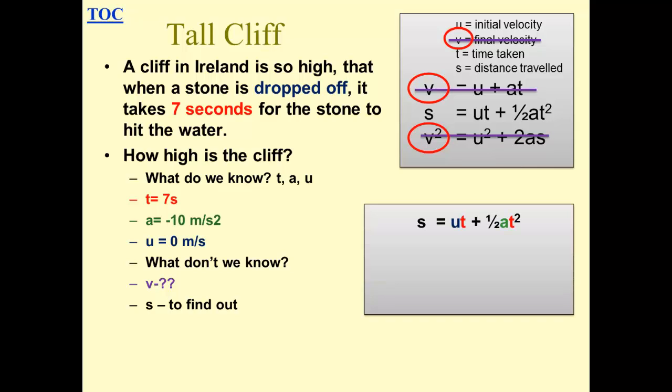S equals UT plus half AT squared. Let's substitute the values. Notice the initial speed is 0, so the first term disappears. We multiply this out and we get the distance that it falls of 245 meters.